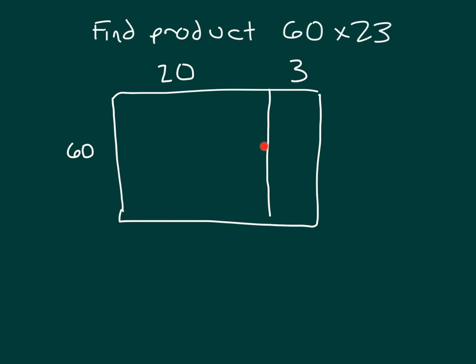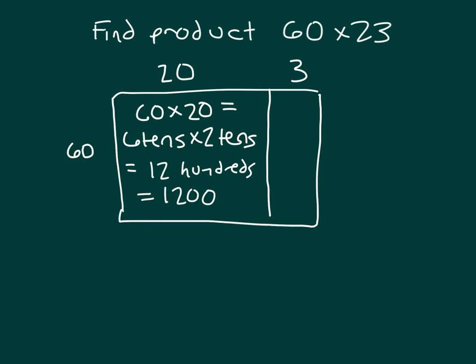Remember, area is length times width. So here we're multiplying 60 times 20. When we're multiplying 60 times 20, that's 6 tens times 2 tens, which is 12 hundreds. Remember, tens times 10 does equal hundreds, and 12 hundreds is written as 1,200. With 60 times 3, that's 6 tens times 3, which equals 18 tens, which can be written as 180.